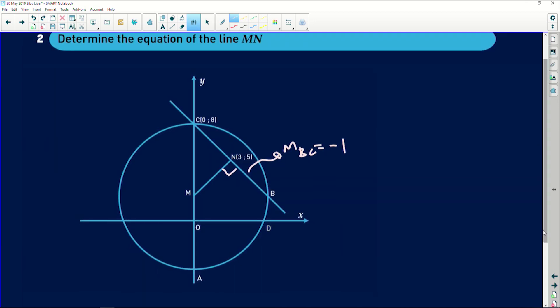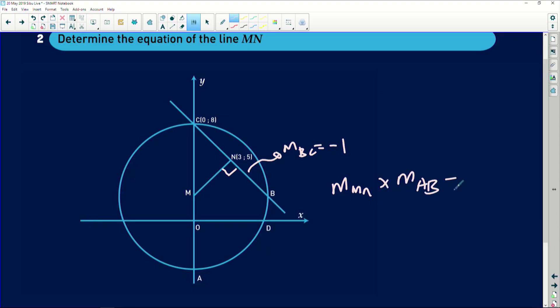MN is perpendicular to BC, so we need to first find the gradient and use point N to work out the equation of MN. The gradient of MN times the gradient of BC equals negative 1. So negative 1 times the gradient of MN equals negative 1. Therefore the gradient of MN is going to be positive 1, quite easy.